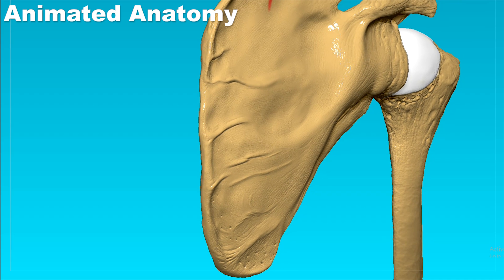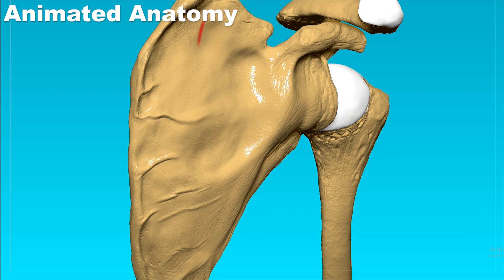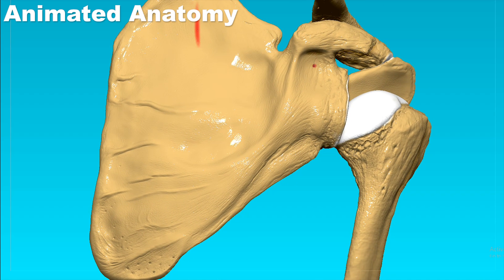If we go just a little bit more laterally, we can see here the coracoid process. It is very thick at its base but becomes thinner as it goes outward.